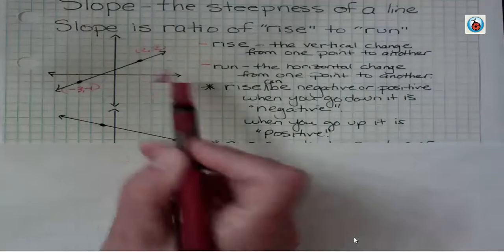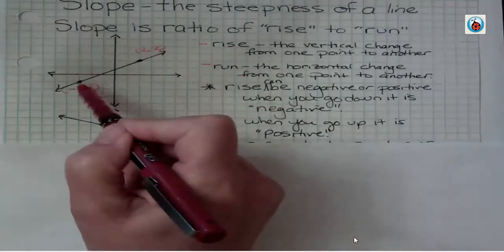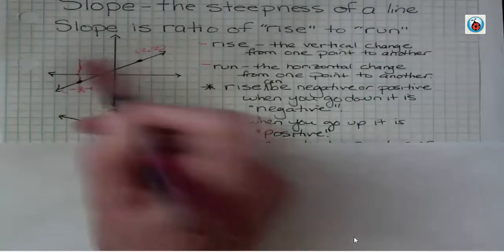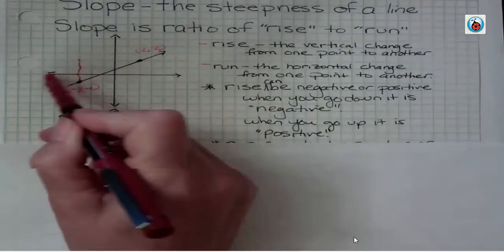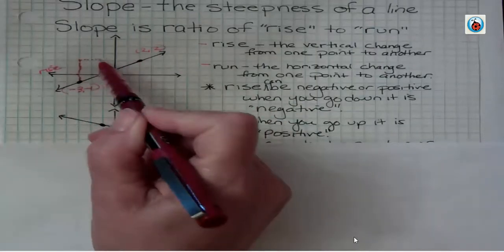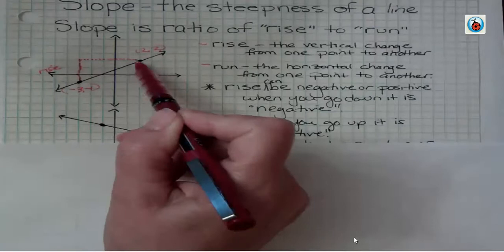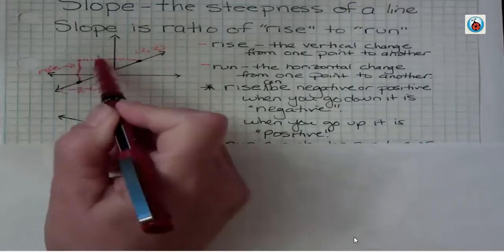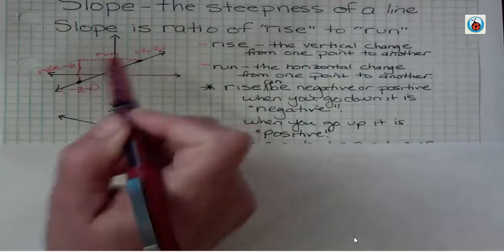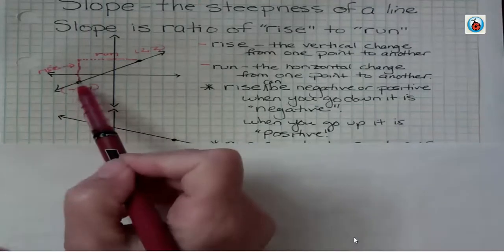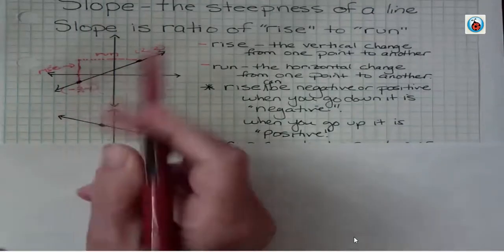When we're talking about the rise, if we go from the leftmost point, we're interested in how far up we go to get from one point to the other. That's our rise. From here, we went three places up, so my rise is three.